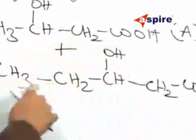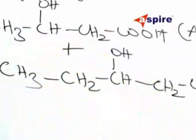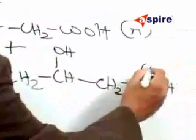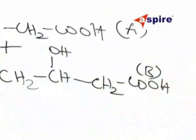The first one is having 4 carbon atoms, the second one is having 5 carbon atoms. Let us name the second compound as B.